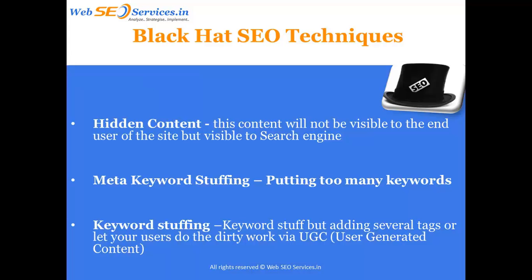Some people try to use their keyword — say 'SEO training in Mumbai' — too many times on their page. When you overuse a keyword, the content doesn't read properly and sentences may not make sense, so people won't like it. To get around this, they hide the content by writing the keyword everywhere on the page but using the same font color as the background, so people cannot see those words.